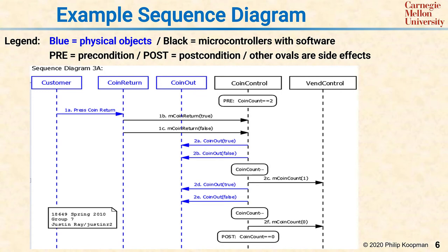Summing up, a sequence diagram has a set of objects, some preconditions, some interactions and side effects, and a postcondition, with that sequence diagram showing one possible way to execute a use case within a system. Once you have use cases and an architecture defined, you need to get from use cases to sequence diagrams to complete high-level design.